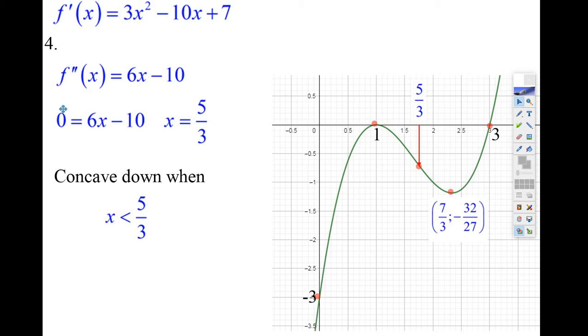We get 0 equals 6x minus 10. We add 10, divide by 6, 10 over 6. Well, that's the same as 5 over 3. That is the x value of the point where concavity changes. So if we go to 5 over 3, which is about 1 point whatever it is, it's about 1 and 2 thirds, 1.66.